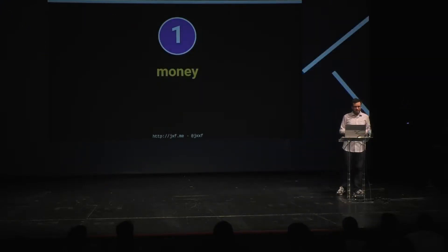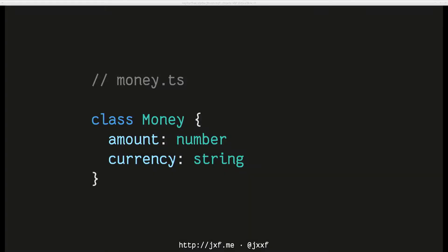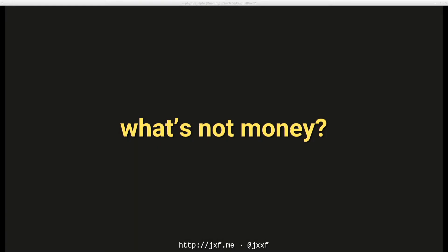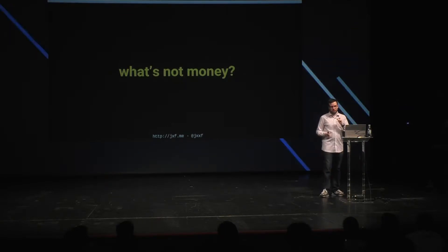Money is one way of fixing this problem. When you ask developers about money, they have a notion of money that looks like a data structure with a currency and an amount — 100 euros or 200 dollars. But that's not really what money is. It's not sufficient to capture the behavior of money; that's just a data structure with no behavior.